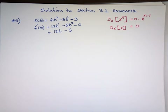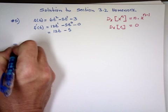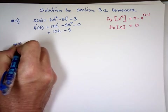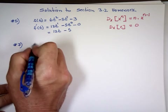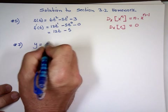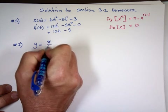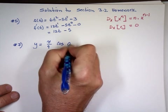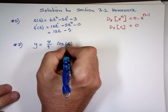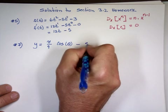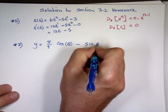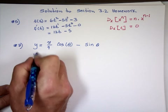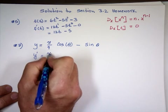Let's look at number 7. y equals pi over 9 cosine of theta minus sine of theta. What is the derivative? y prime. Here's the pi over 9 — that's a constant.